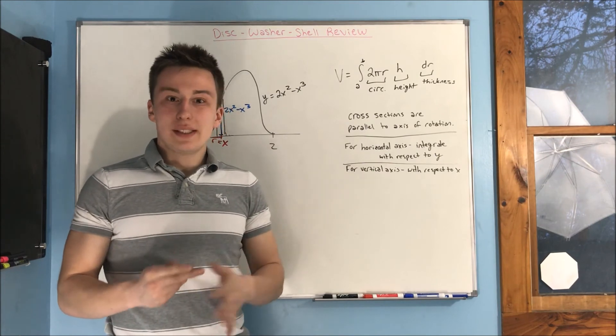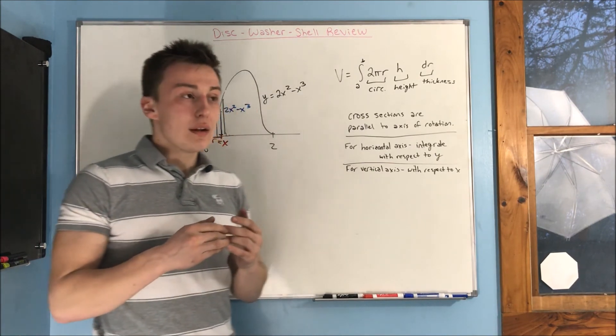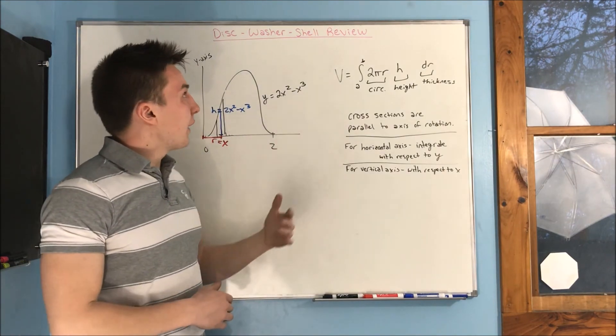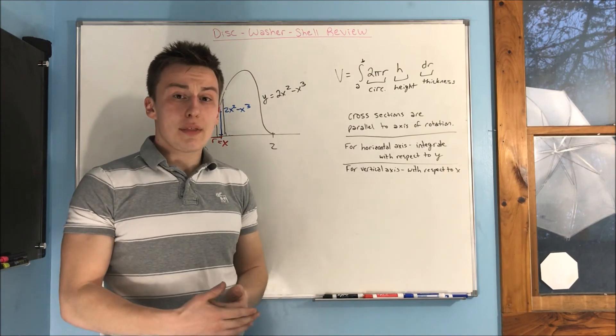Washer method is probably the most tedious to use because you have two radii to figure out. A lot of people just end up using shell method for basically everything except for when you can use disk method.